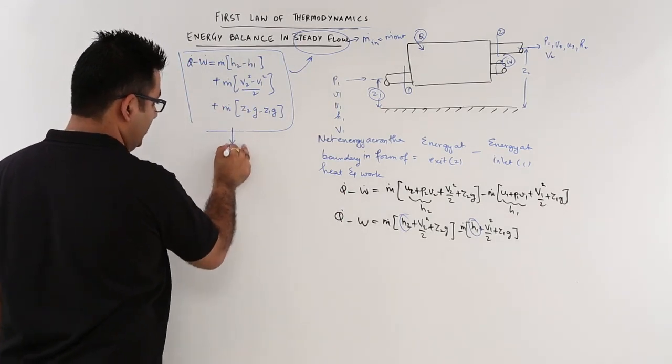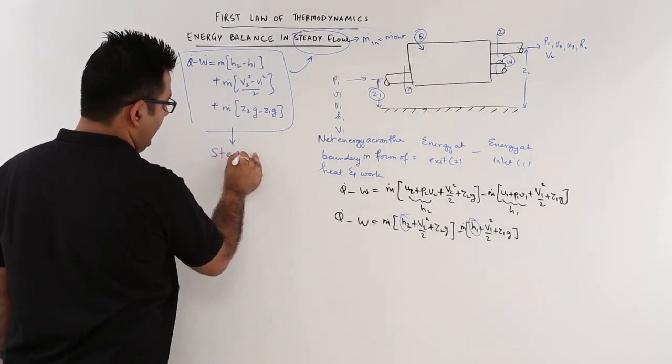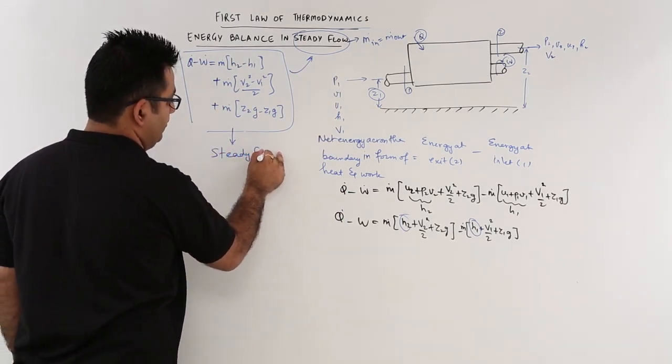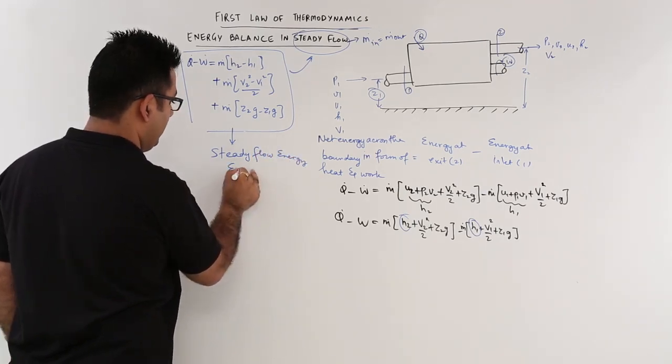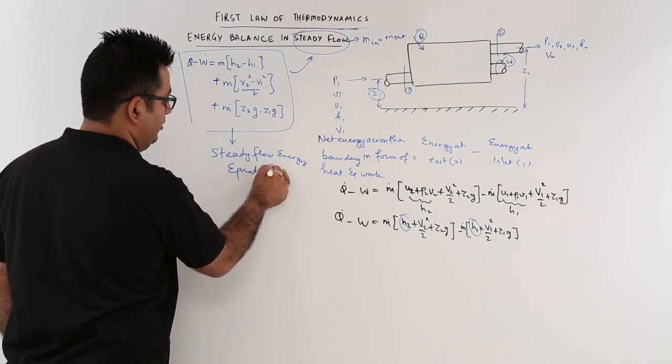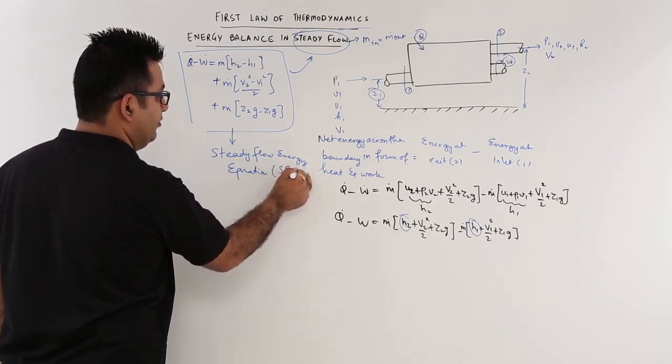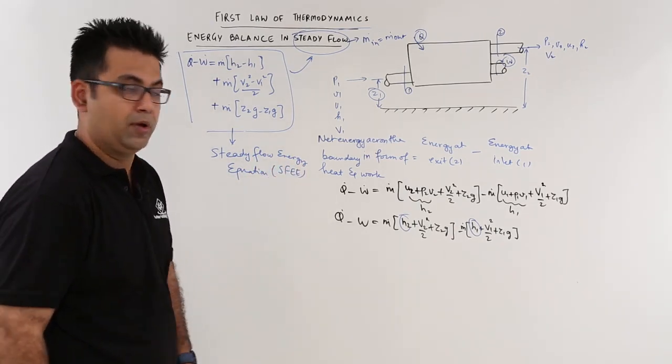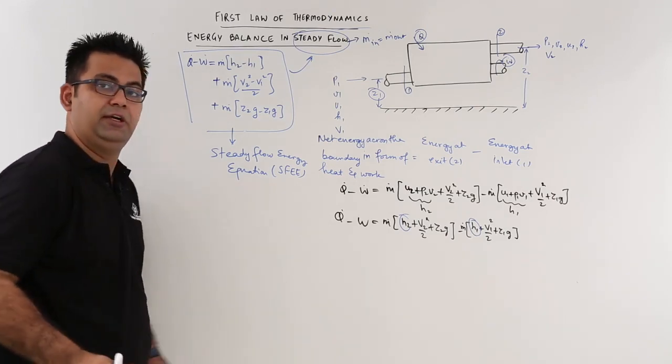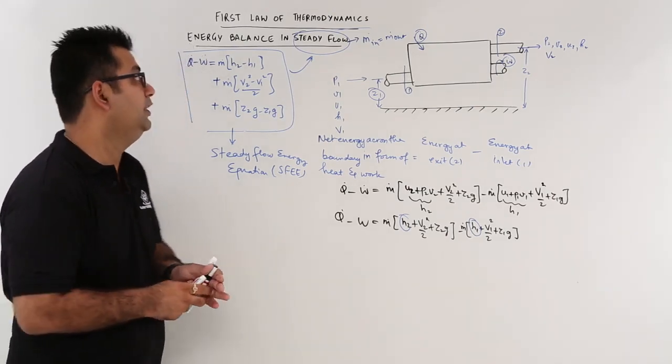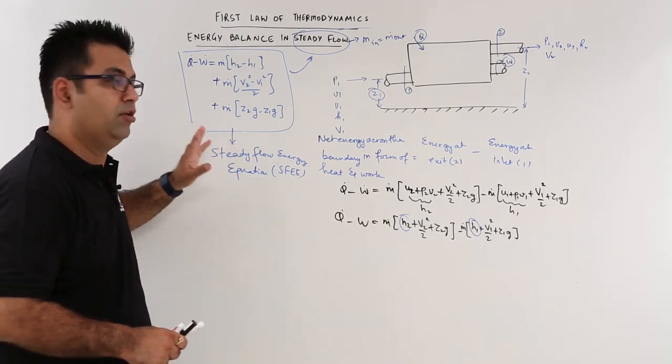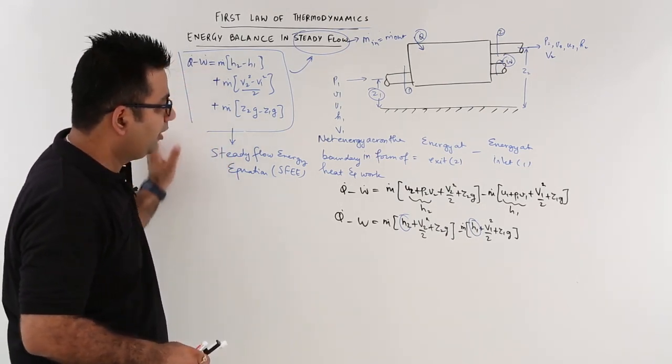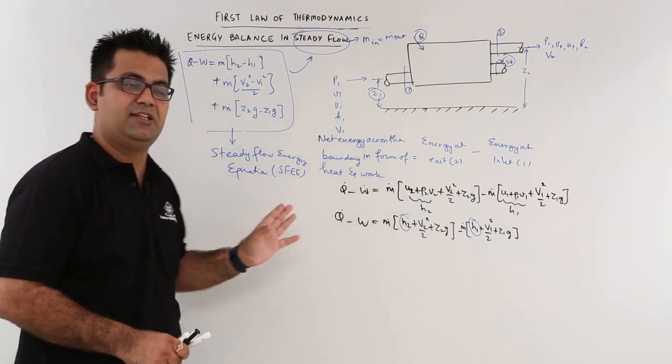This kind of equation is called a steady flow energy equation, or SFEE. This is a very important equation to understand and remember in the flow process application of first law. I hope you understood this very easy analysis.